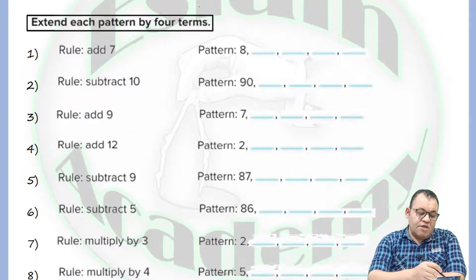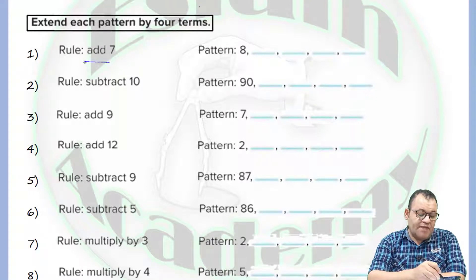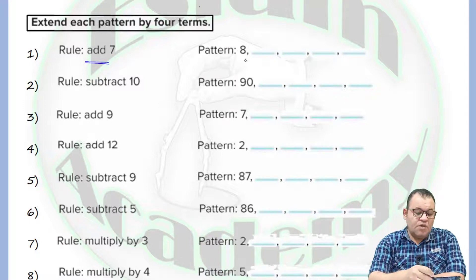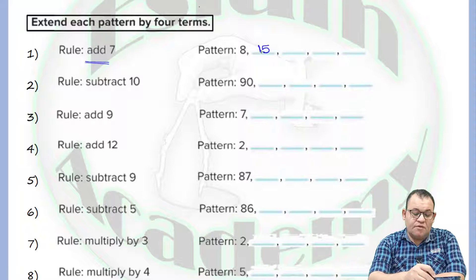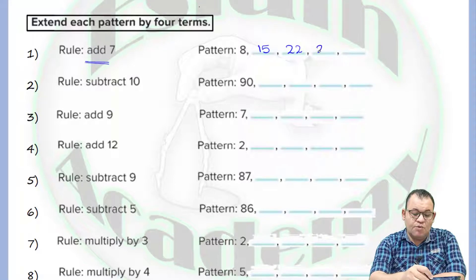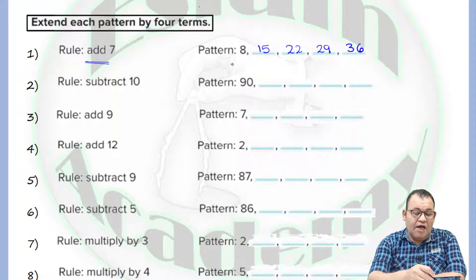In question number one, we need to extend each pattern. The rule is that we add 7, so each time I will add 7. The pattern starts with 8. By adding 7 the answer will be equal to 15. By adding one more 7 it will be equal to 22. By adding 7 it will be equal to 29. If you add 7 it will be equal to 36. And that's how we can find the pattern.